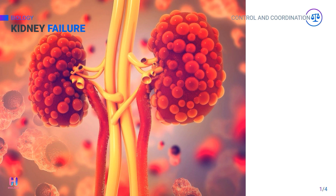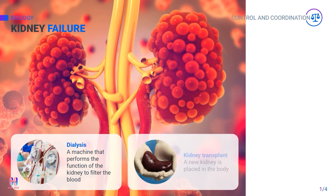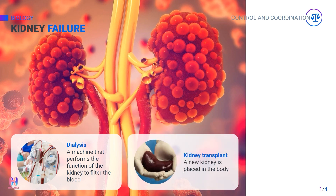When both kidneys fail, there are two methods to help a person survive. The first treatment is dialysis — a blood purifying treatment where a dialysis machine acts as an artificial kidney and filters the blood outside the body. The second treatment is a kidney transplant, which replaces the old kidney with a new one.